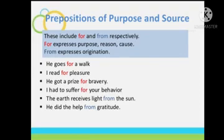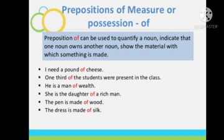We also have prepositions of purpose and source, which include 'for' and 'from' respectively. 'For' expresses purpose, reason, or cause, while 'from' expresses origination. For example, 'I read for pleasure' — it is showing my reason or purpose for reading, so 'for' is the preposition. 'The earth receives light from the sun' — 'from' is used to show the origination of light.